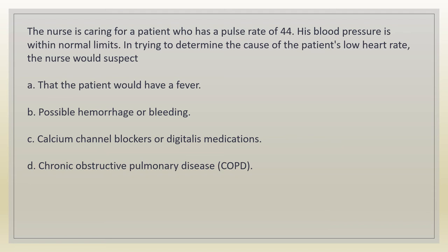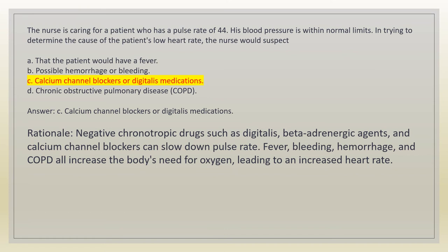The nurse is caring for a patient who has a pulse rate of 44. His blood pressure is within normal limits. In trying to determine the cause of the patient's low heart rate, the nurse would suspect: a. that the patient would have a fever. b. possible hemorrhage or bleeding. c. calcium channel blockers or digitalis medications. d. chronic obstructive pulmonary disease. Answer: c. Calcium channel blockers or digitalis medications. Rationale: negative chronotropic drugs such as digitalis, beta-adrenergic agents, and calcium channel blockers can slow the pulse rate. Fever, bleeding, hemorrhage, and COPD all increase the body's need for oxygen, leading to an increased heart rate.